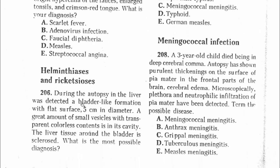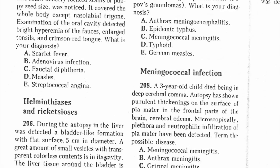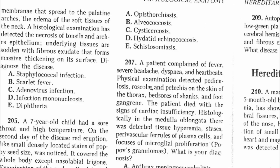Question 206: During autopsy, a bladder-like formation with a flat surface of 5 cm diameter was detected in the liver; a great amount of small vesicles with transparent colorless content in each cavity; the liver tissue around the bladder is sclerosized. For a bladder-like formation with flat surface, this is hydatid — echinococcosis. The answer is D — echinococcosis.